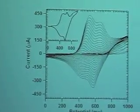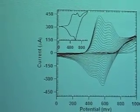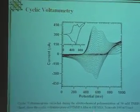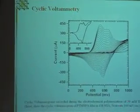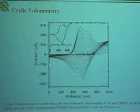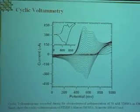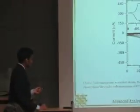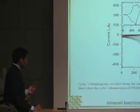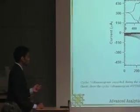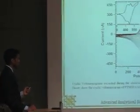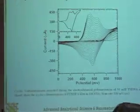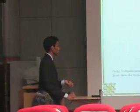This figure shows the cyclic voltammogram for the electrochemical polymerization. It shows two anodic peaks and two cathodic peaks, confirming the formation of the film from the electropolymerization of the monomer on ITO.